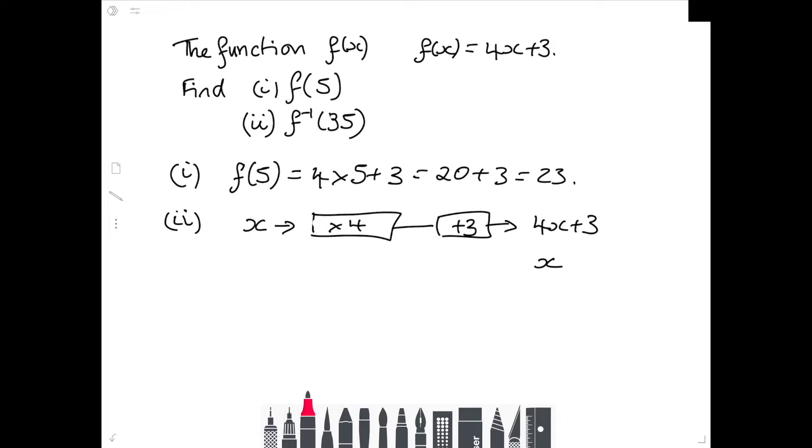To find the inverse, I start from the end, come backwards and do the opposite. I take away 3. Instead of multiply by 4, I divide by 4. So when I come out the other end, I've got X, take away 3 and then divide it by 4.